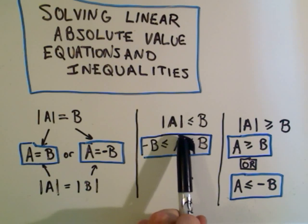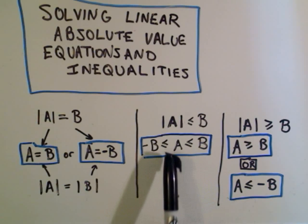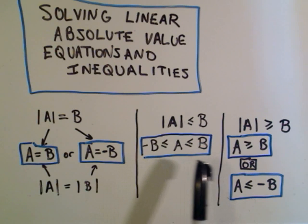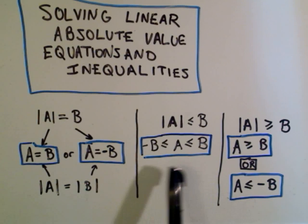If you have the absolute value of A less than or equal to something, you basically just take negative B to B and sandwich A in between, and then you have to solve that compound inequality.